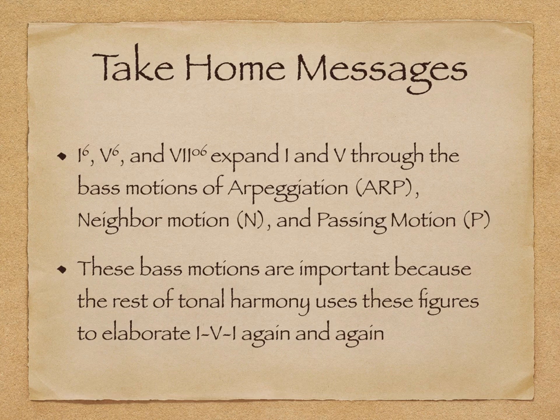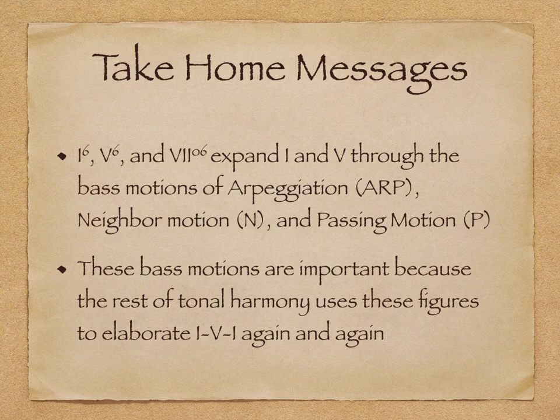We learned three new chords in this video: the I⁶, V⁶, and VII°⁶, which are used to expand I and V. They achieve expansion by moving, particularly in the bass, through the figurations of arpeggiation (abbreviated ARP), neighbor motion (abbreviated N), and passing motion (abbreviated P). These bass motions are very important because the rest of tonal harmony uses these particular figures to elaborate the I and V bookends again and again. That's all for now. Happy part writing!